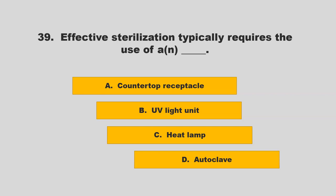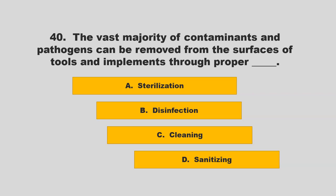Effective sterilization typically requires the use of a blank. Options: countertop receptacle, UV light unit, heat lamp, or autoclave. The correct answer is D: autoclave.